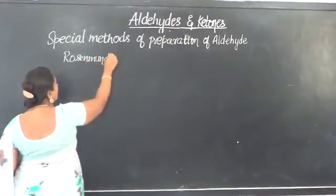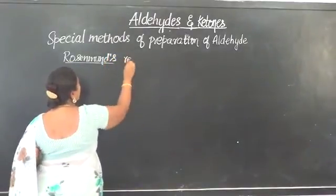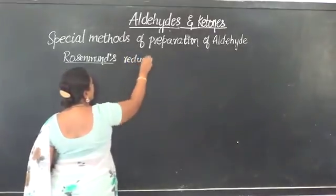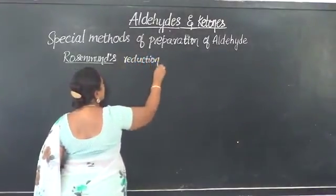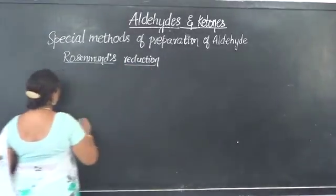The popular method being Rosenmund's reduction. Popular one being Rosenmund's reduction.